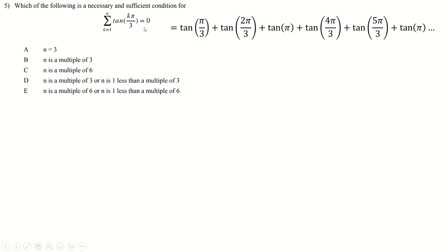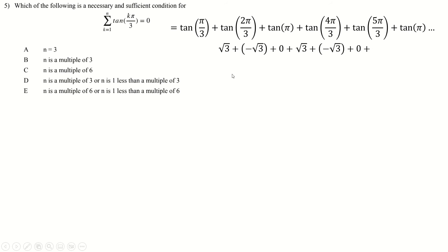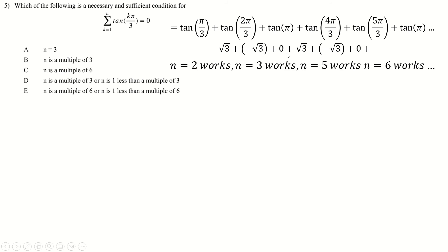Question 5 looks similar to a real TMUA paper question. You put k = 1, 2, 3, etc. and end up with values of tan. You can draw the graph: tan(π/3) = √3, the next is −√3, then 0. Because tan repeats every π radians, the next results are also √3, −√3, 0, and so on. For the sum to equal zero, you could stop at 2, 3, 5, 6, etc. So n is either a multiple of 3 or one less than a multiple of 3 — answer D.